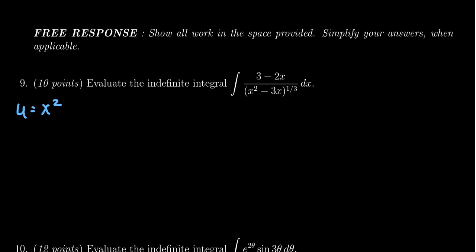u is x squared minus three x. So then du would equal two x minus three dx.